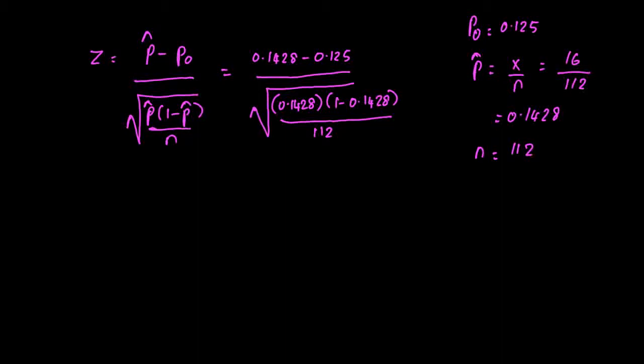So what I get here is 0.1428 minus 0.125 divided by square root of 0.1428 times 1 minus 0.1428 divided by 112. We are rounding to four decimals here. The denominator part is called the standard error, found to be 0.033. The numerator is 0.0178. If we divide the two, we will end up getting a value of 0.5434 for the test statistic.